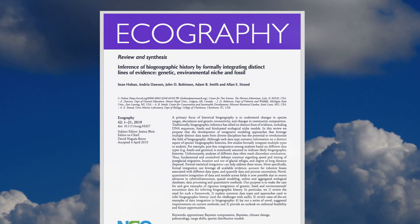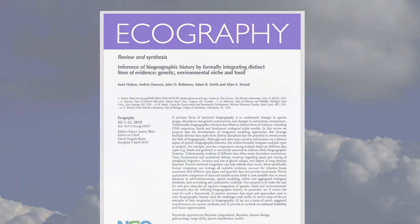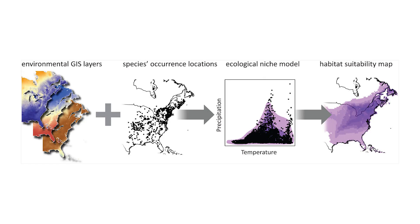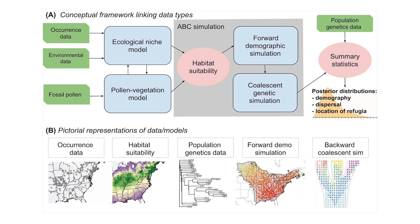In our new paper in Ecography, we pose a grand challenge: how can biogeographers formally integrate different lines of evidence to answer fundamental questions related to how species responded to past changes in climate? After reviewing the state-of-the-art analyses for different categories of data, we propose a statistical method to integrate ecological niche models, pollen vegetation models, and genetic analyses. This kind of formal integration will help address the shortcomings of each type of data and will make the uncertainties more clear. The tool will help scientists better quantify where species were at different points in the past and why.